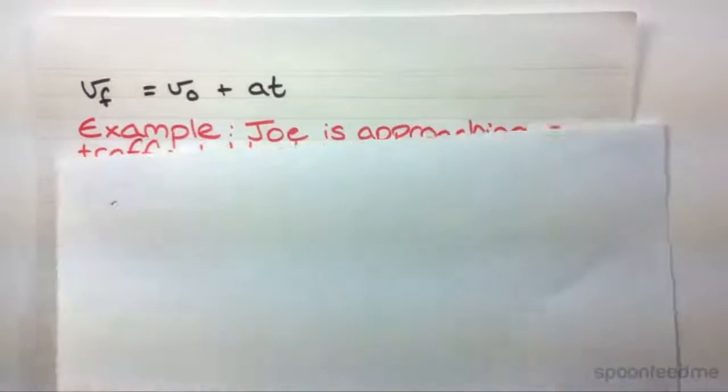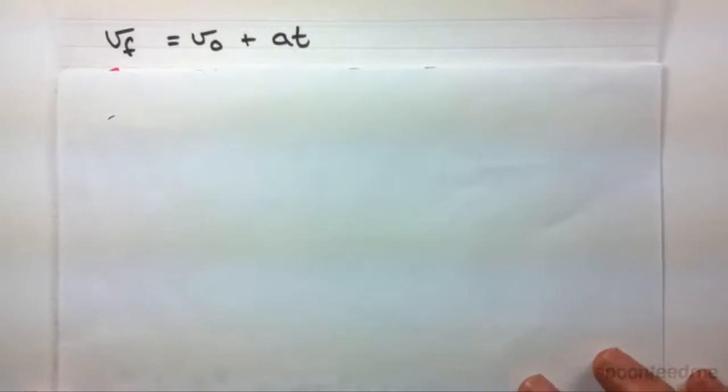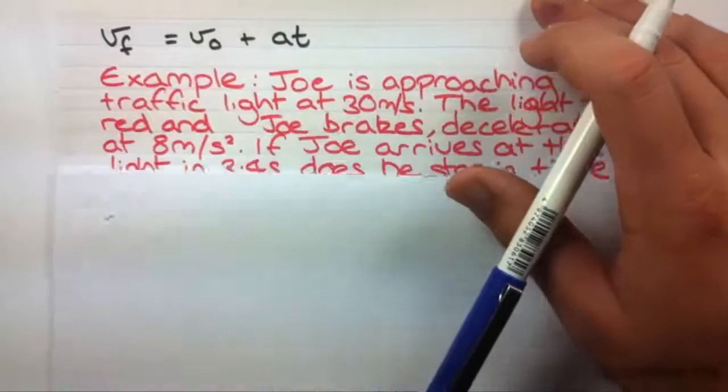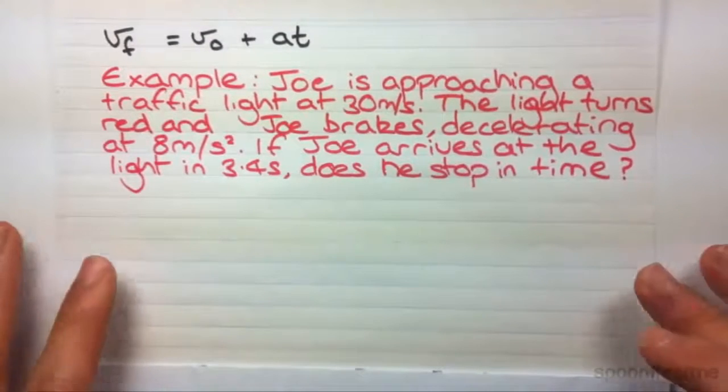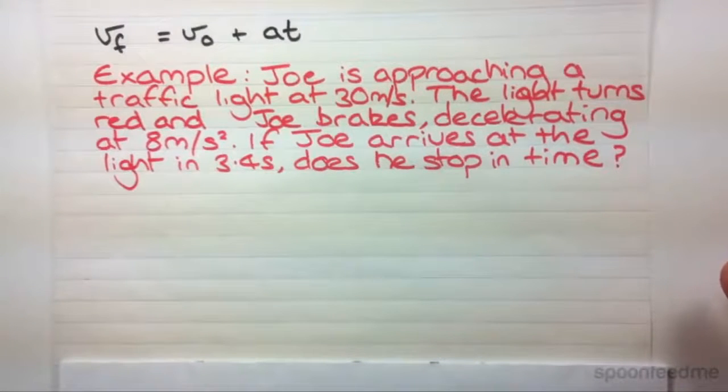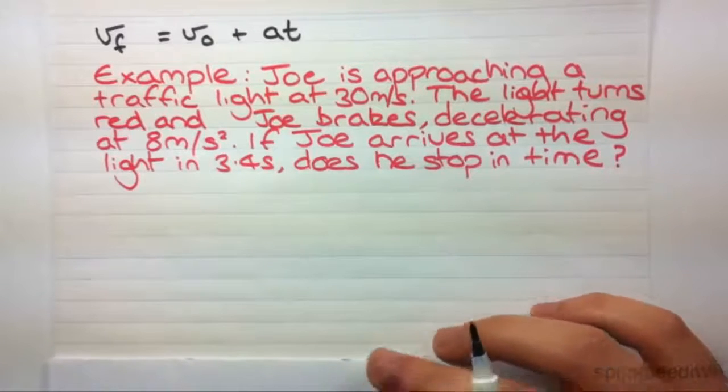The second equation we're going to look at is this one. It says that the final velocity equals the initial velocity plus acceleration times time. The example I've got here. Joe is approaching a traffic light at 30 metres per second. The light turns red and Joe breaks, decelerating at 8 metres per second squared. If Joe arrives at the light in 3.4 seconds, does he stop in time?